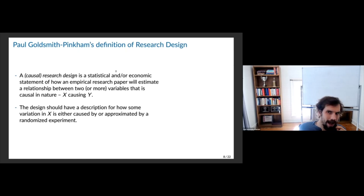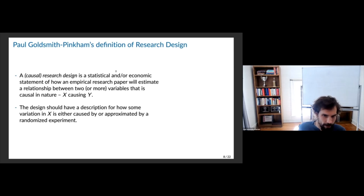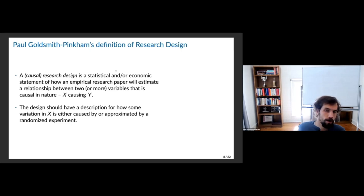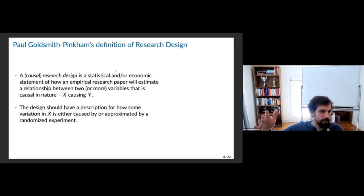Here's my definition: a causal research design is a statistical and/or economic statement of how an empirical research paper will estimate the relationship between two or more variables that is causal in nature — X causing Y. The design should have a description of how some variation in X is either caused by or approximated by a randomized experiment. By defining the statistical assumptions, you're implicitly saying they define enough exclusion restrictions that the parameter you're interested in is identified — not confounded in some way.